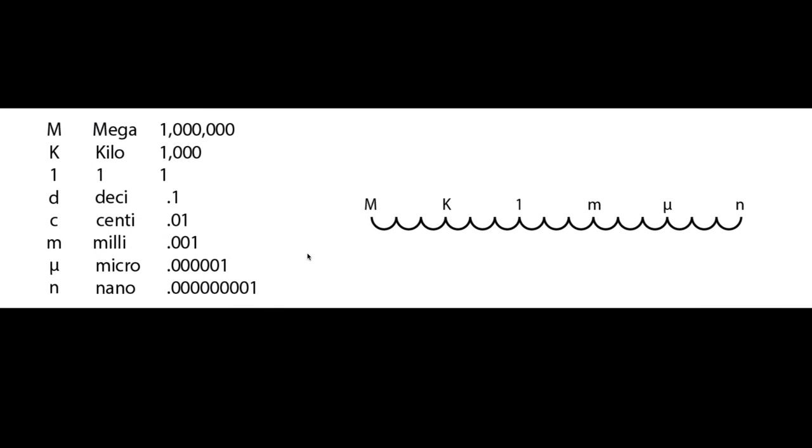Now the trick is to put these on a number line of sorts. So if we have the number one, and picture each of the bottom of these as being a zero, the bottom of a zero.